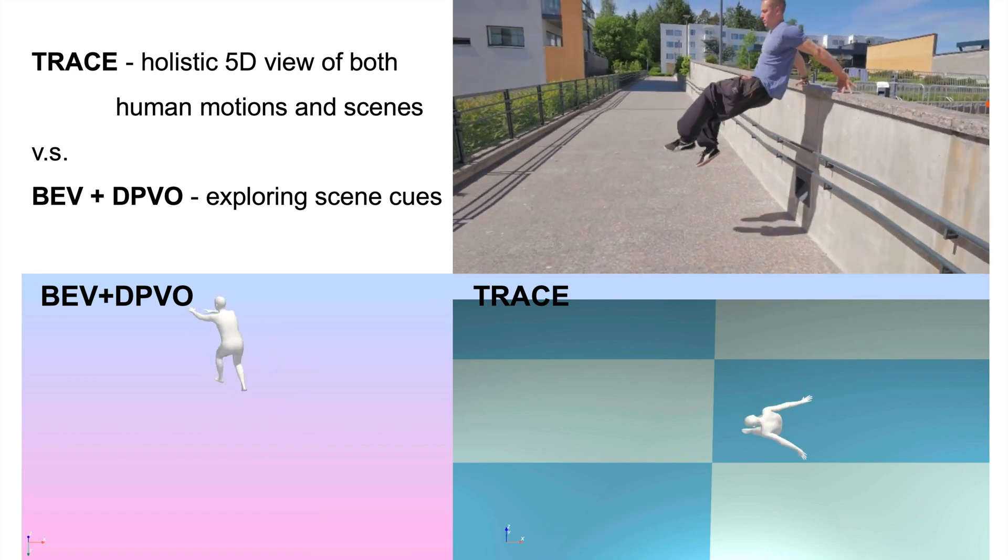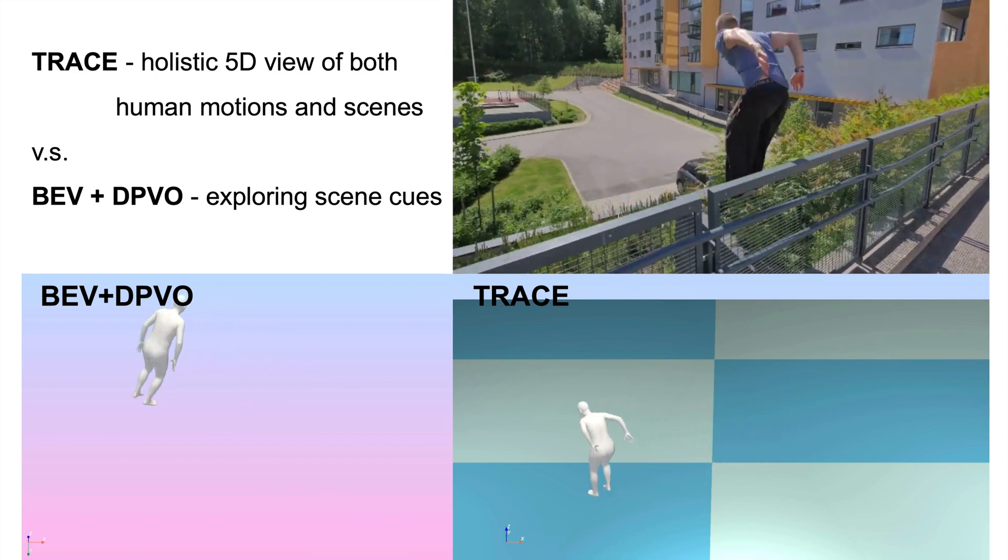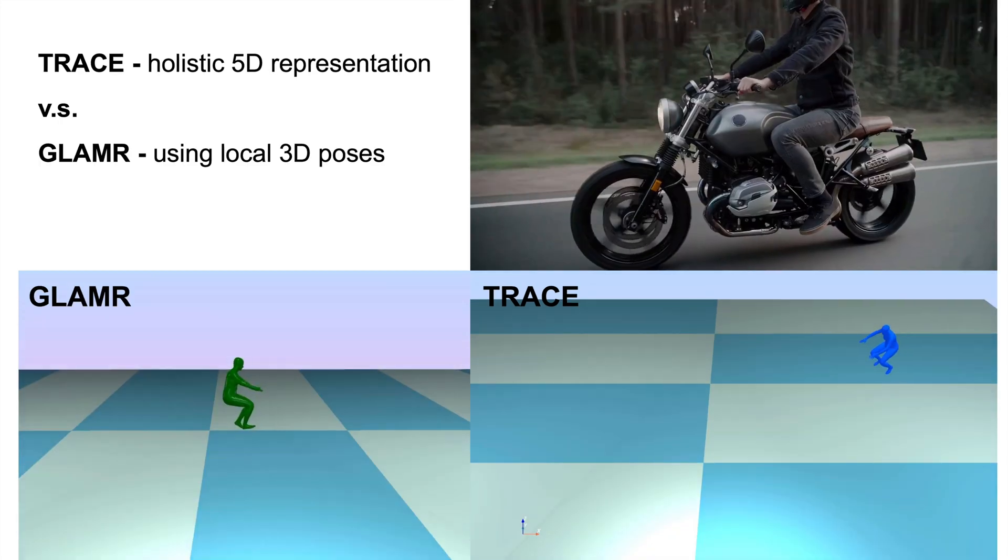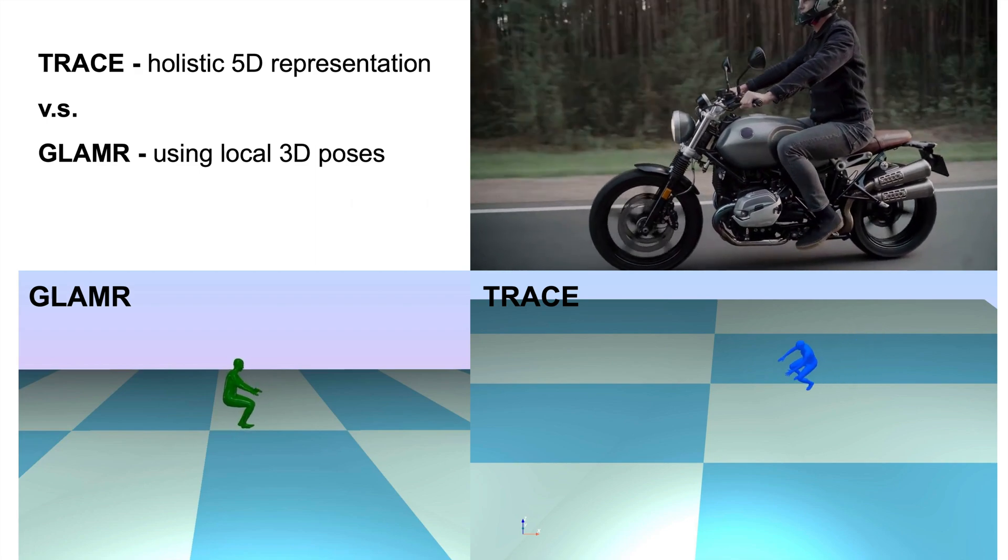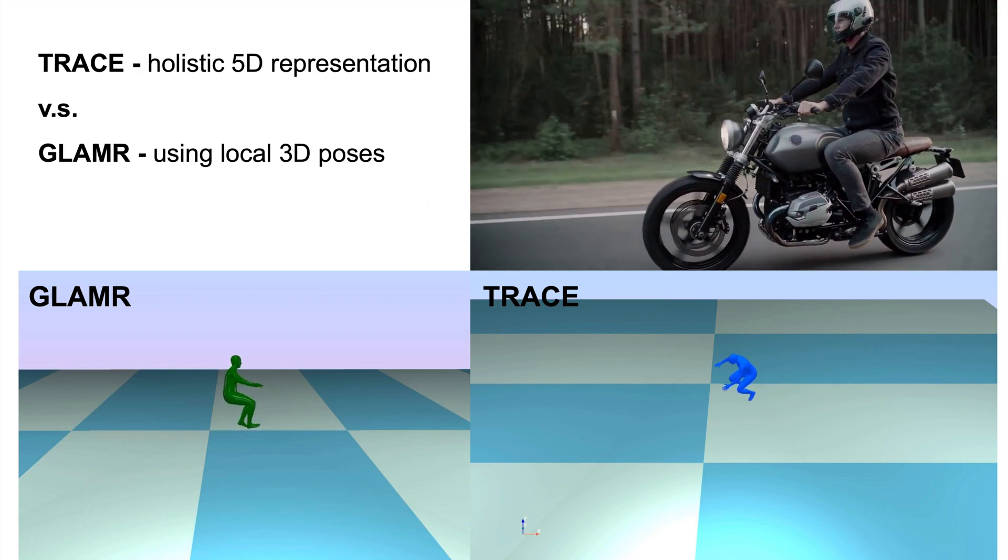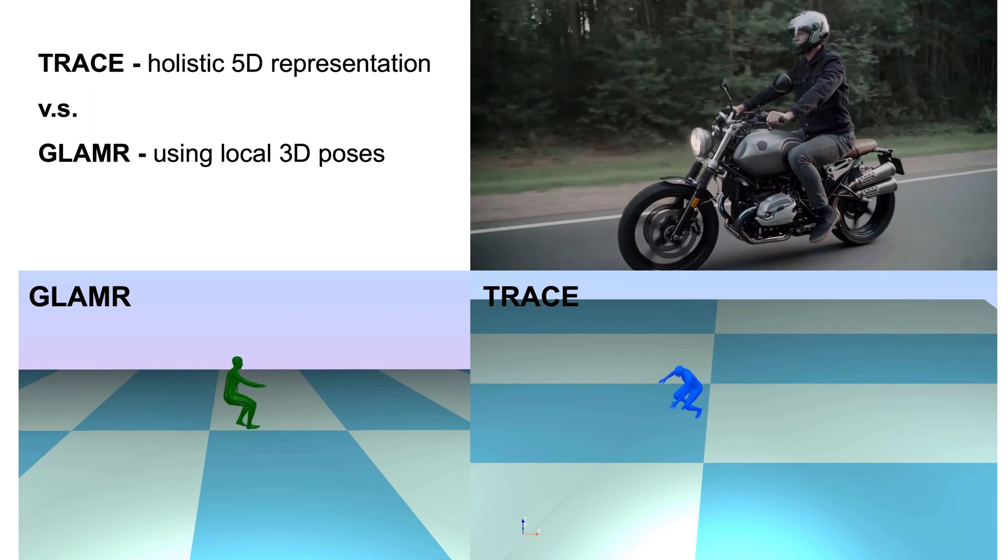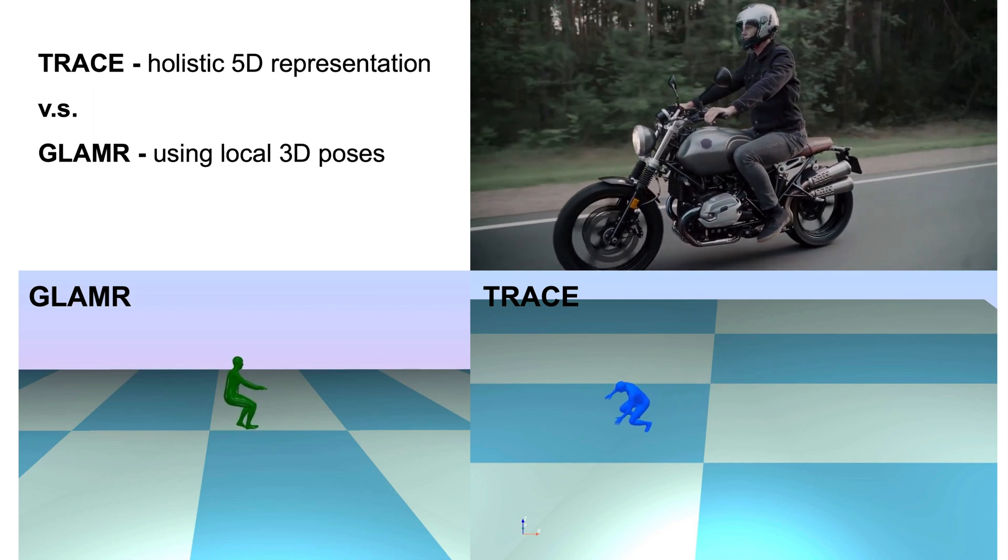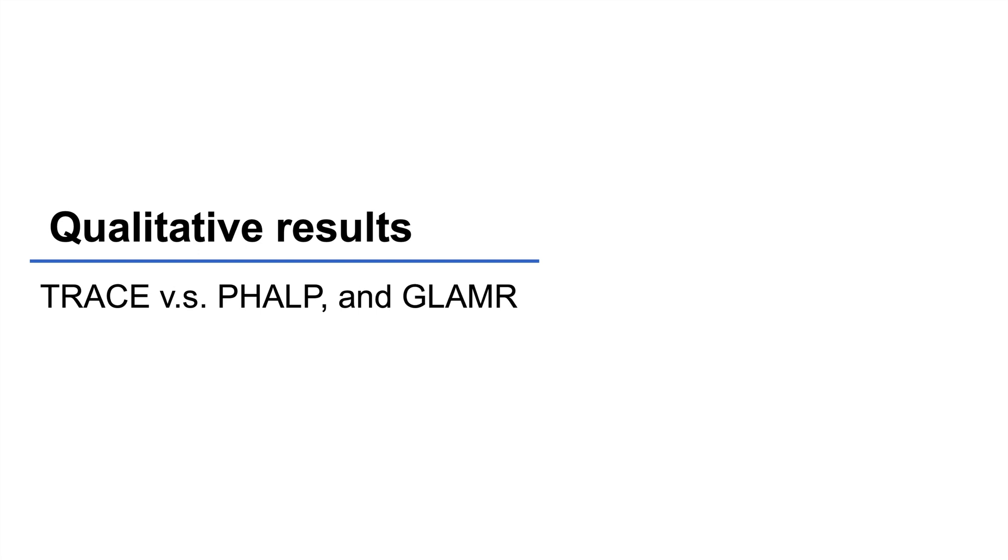With a holistic 5D view of both human motions and scenes, TRACE can handle more challenging cases. Since TRACE sees the whole scene, it can use information about the scene motion to avoid Glamour's failures caused by inferring global trajectories from local 3D poses only.